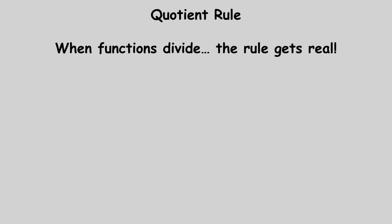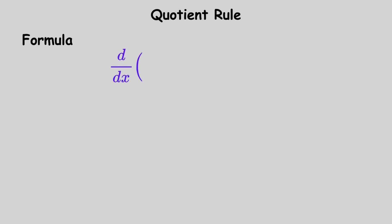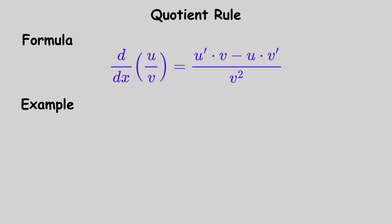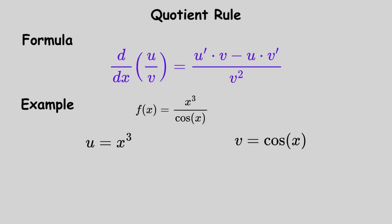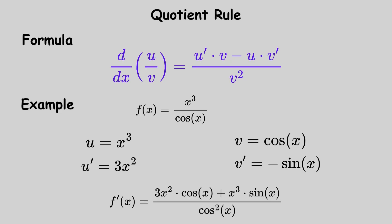When one function is divided by another, use the formula: the derivative with respect to x of u over v equals u prime v minus u v prime divided by v squared. For example, if f of x equals x cubed over cosine of x, let u equal x cubed and v equal cosine of x. Then u prime equals 3x squared and v prime equals negative sine of x, so f prime of x equals 3x squared cosine of x plus x cubed sine of x divided by cosine squared of x.